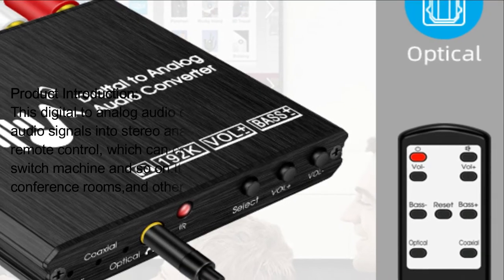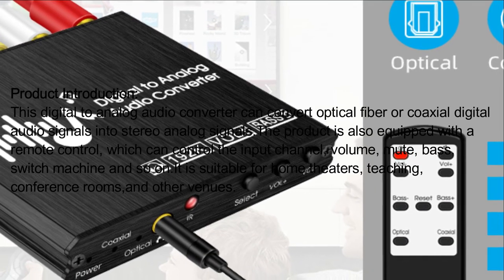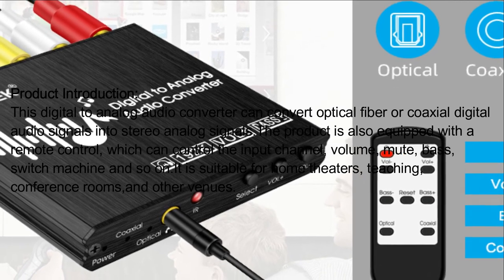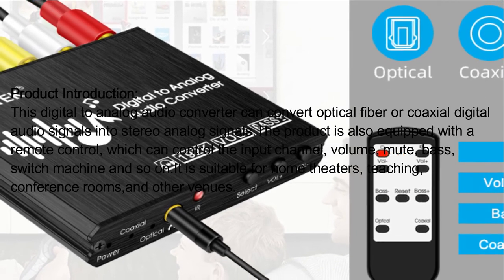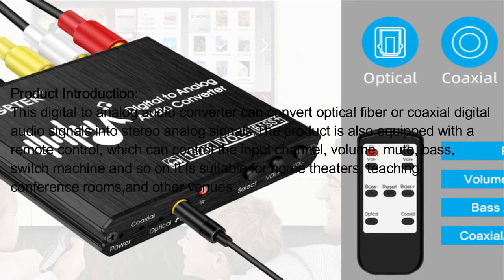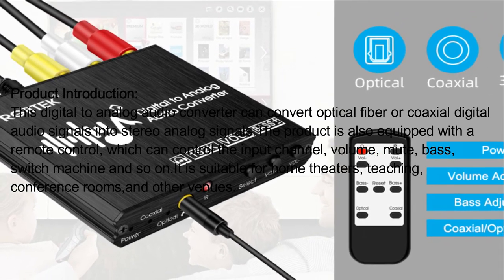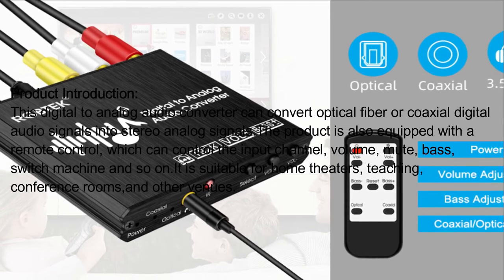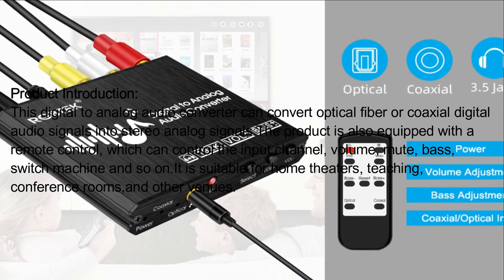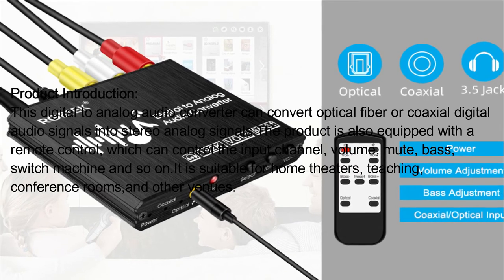Product Introduction: This digital-to-analog audio converter can convert optical fiber or coaxial digital audio signals into stereo analog signals. The product is also equipped with a remote control, which can control the input channel, volume, mute, bass, power switch, and more. It is suitable for home theaters, teaching, conference rooms, and other venues.